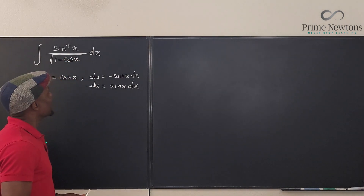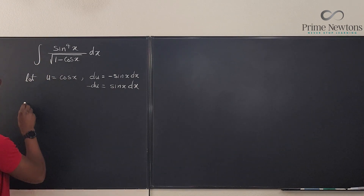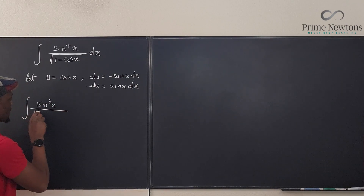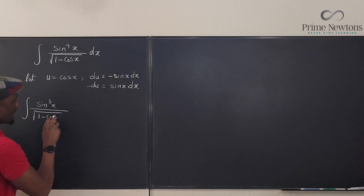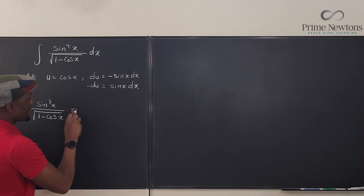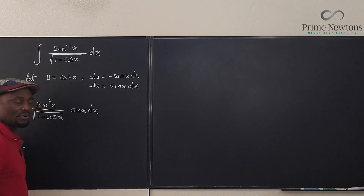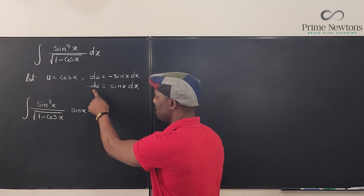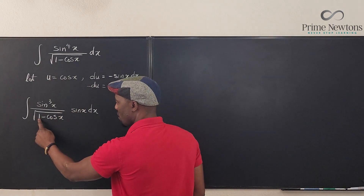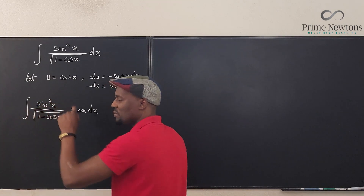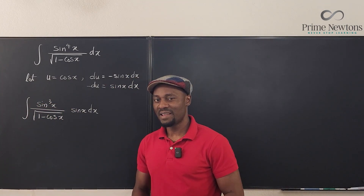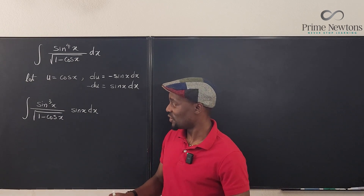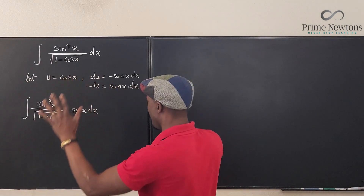What I need to replace is sine x dx, but I have an even number of sine x's, so let's rewrite this. This integral is going to be the integral of sine cubed x over the square root of 1 minus cosine x, multiplied by sine x dx — because this is what I want to replace. Now when I replace sine x dx I'll be replacing it with minus du, and I need to write sine cubed x in terms of u, which might be some difficult task.